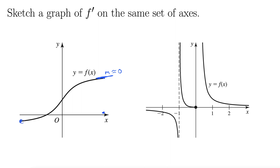Same thing over here on the left side. Let's take this point — if I were to find the derivative here, well, it's close to zero, but it's a little bit above zero. The slope is slightly positive. Remember, slopes going up and to the right are positive; slopes going down and to the right are negative. This is going a little bit up and to the right, so it's going to be a little bit above zero.